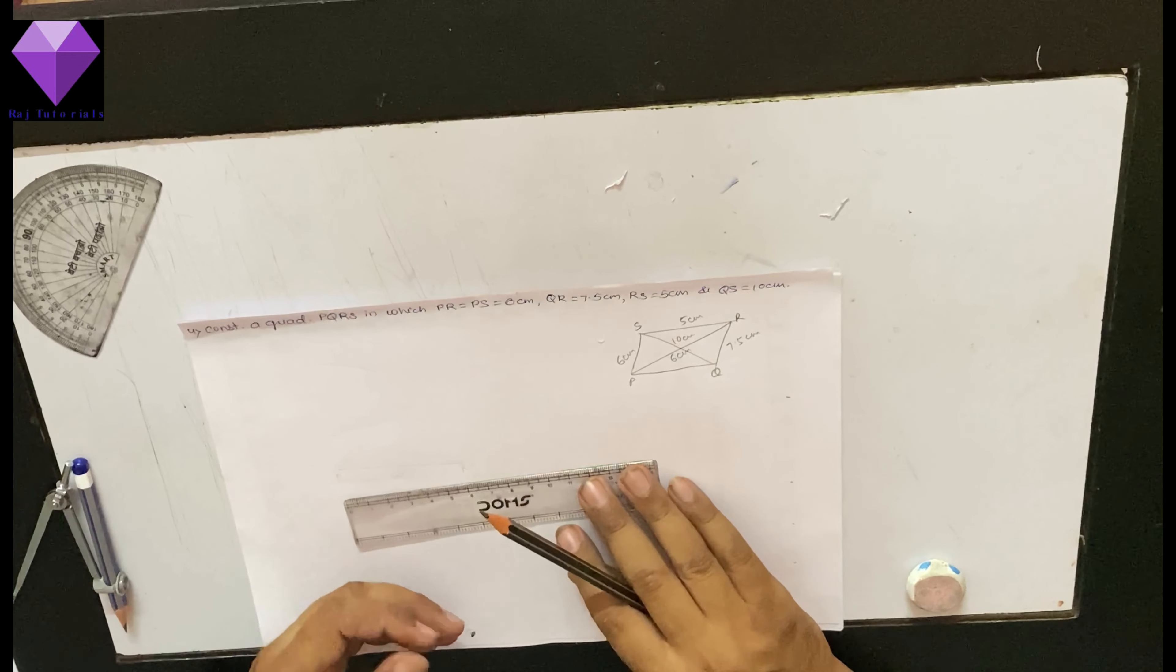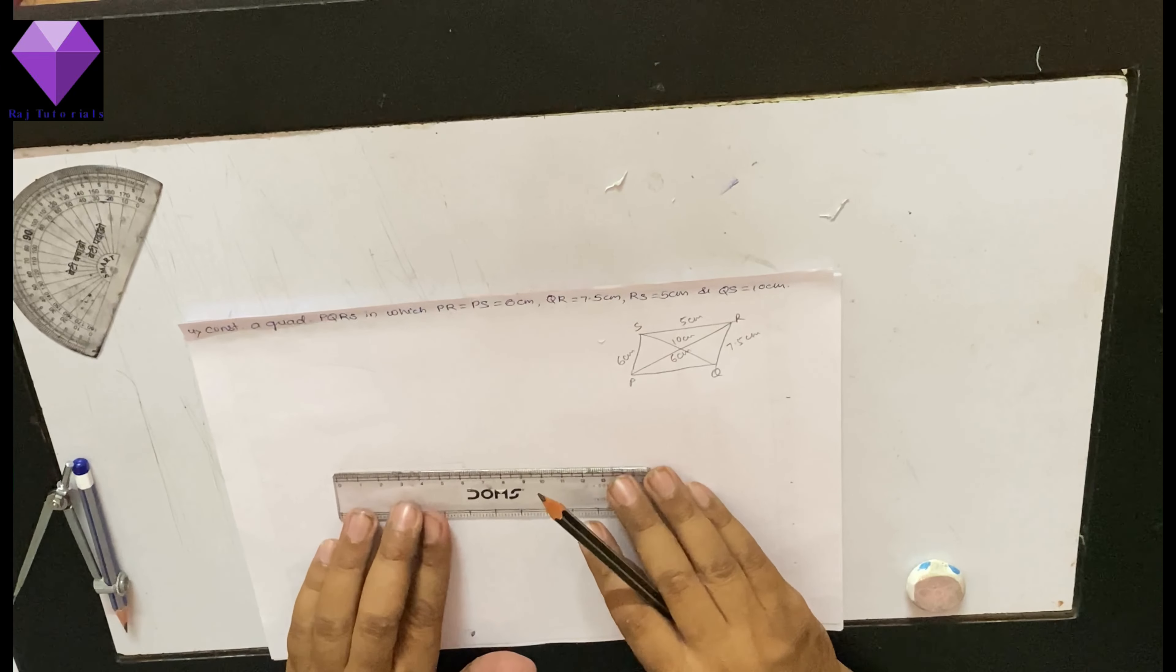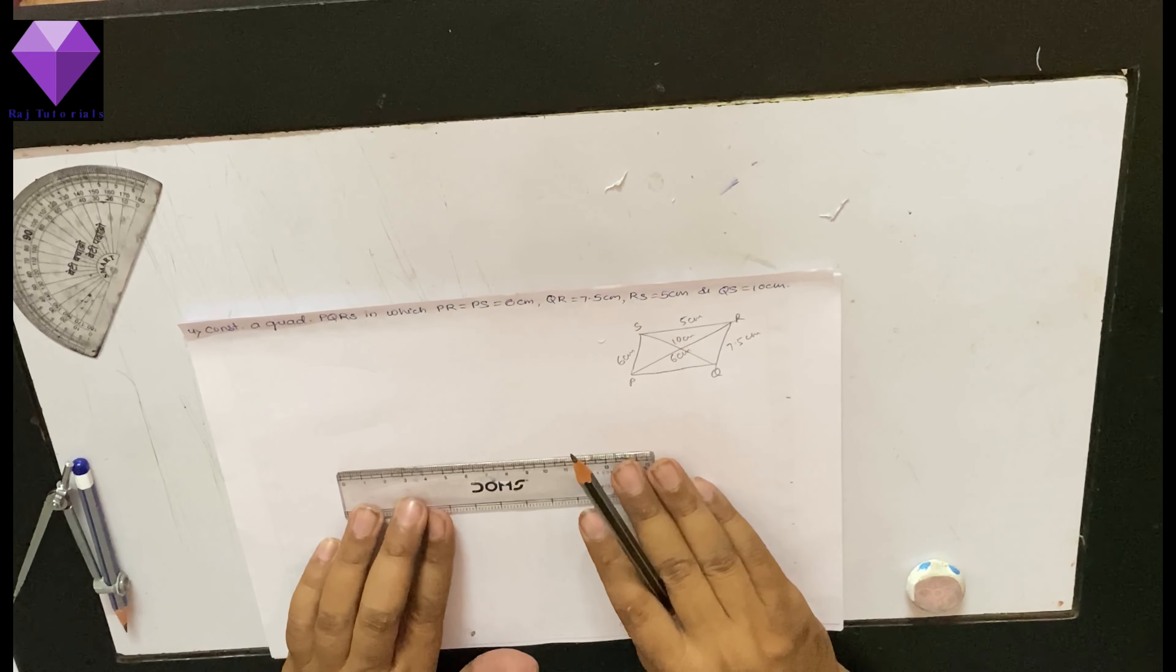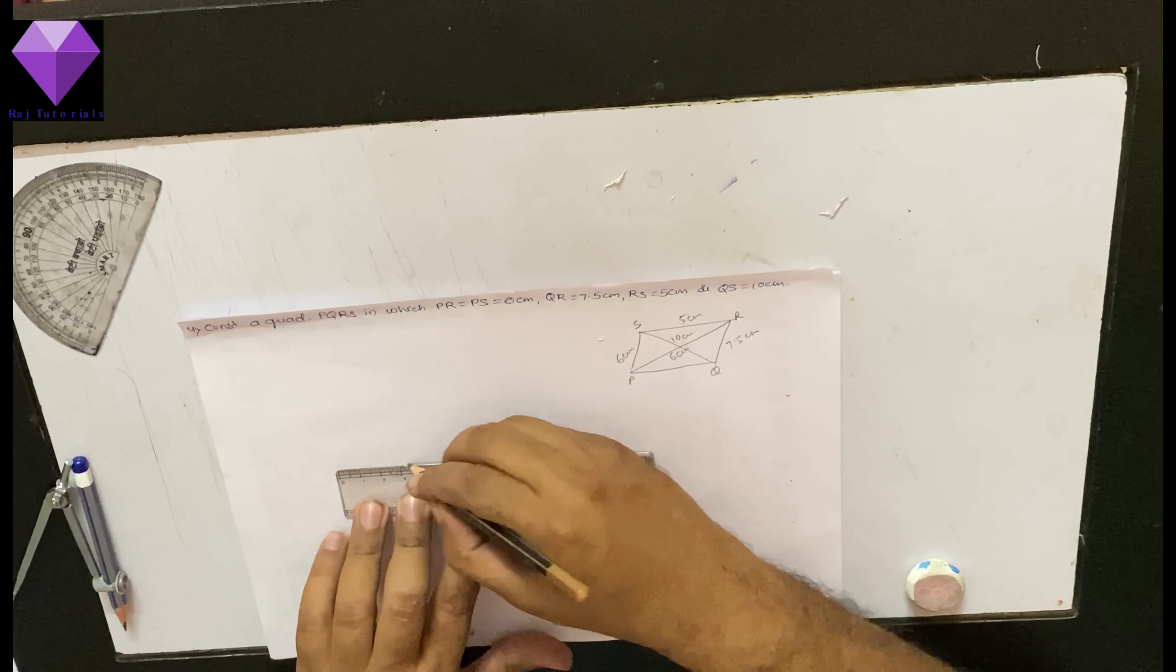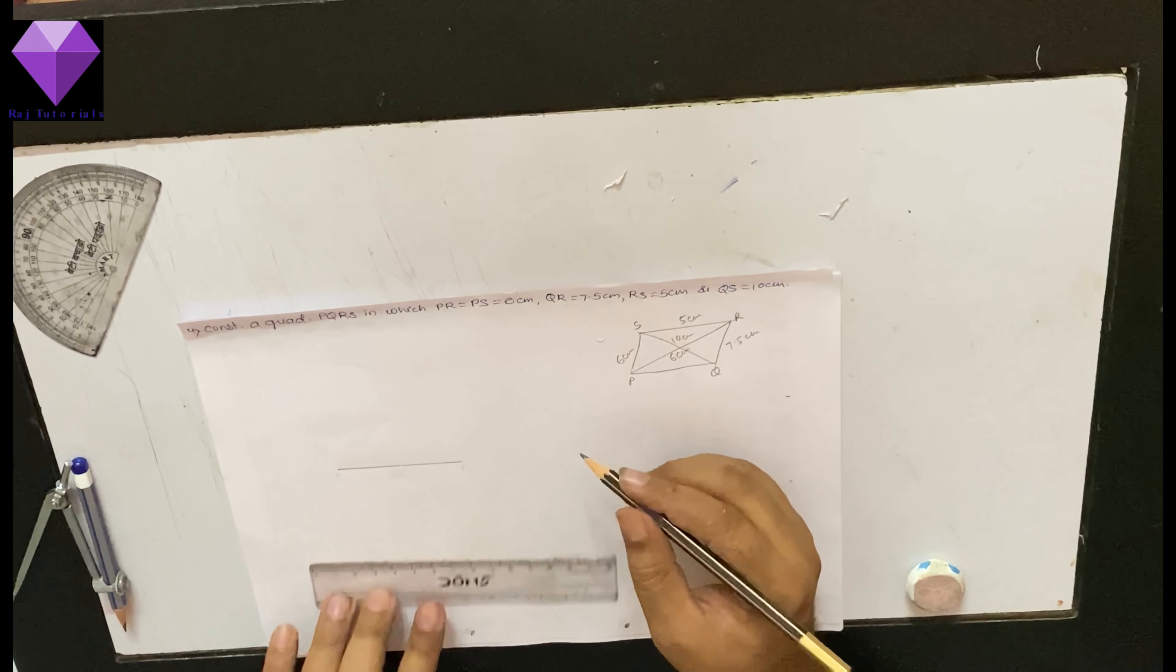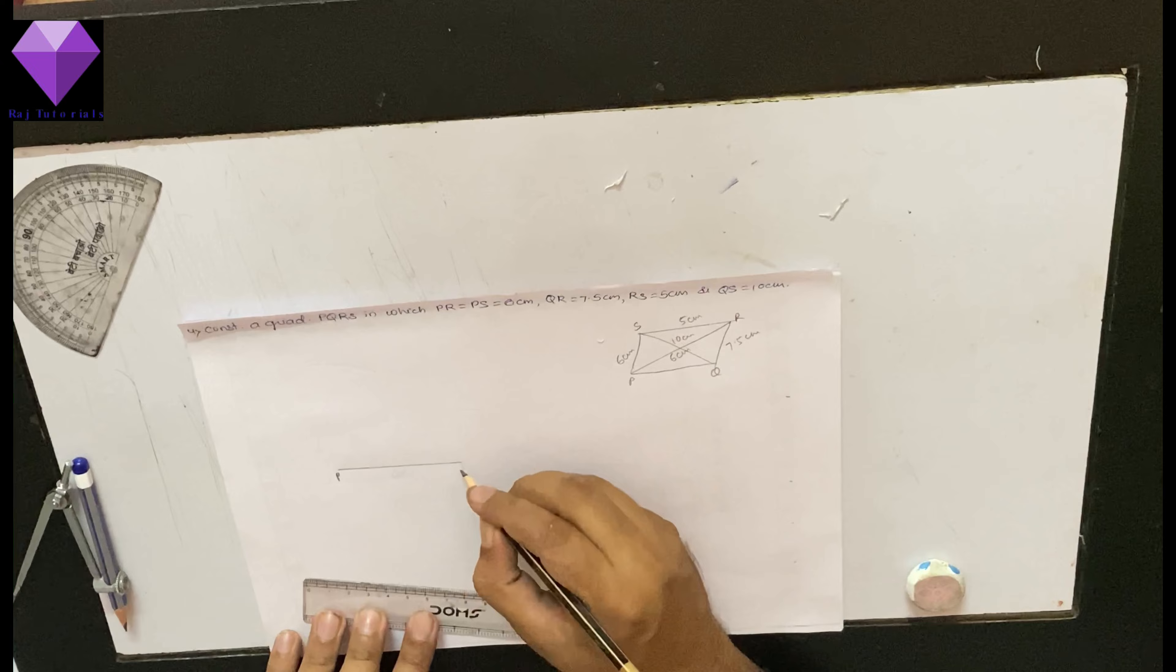First of all, I am making a base of 6 cm as PR. I have taken the diagonal as the base. So, this is my base PR 6 cm.